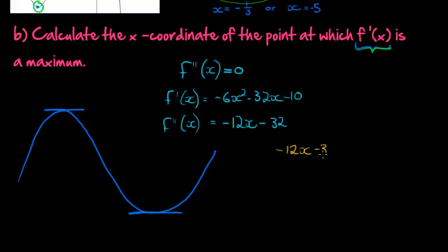So 12x, negative 32, equal to zero, gives me x is equal to 32 over negative 12. When I simplify that, I get 16. 4 can go into both of those. 4 goes into here 8 times and into there 3 times. It's negative 8 over 3 or negative 2 and 6, 6, 6, 6 repetitively.